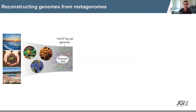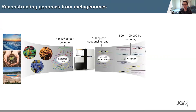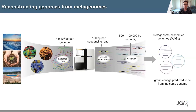Recently, with advances in both DNA sequencing technologies and computational methods, we've actually been able to start reconstructing the genome sequences of microbes from metagenomic data — directly from the organism's natural environment, without the need for any cultivation or laboratory isolation. The way this procedure works is you perform DNA sequencing on an environmental sample, generating millions of short sequencing reads, which are assembled into longer sequences called contigs. These contigs can then be grouped into putative genomes, or metagenome-assembled genomes — MAGs for short.